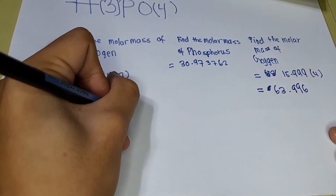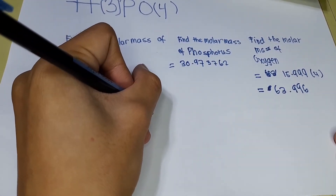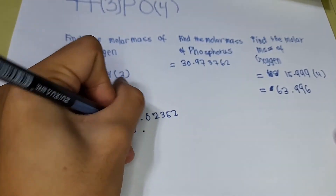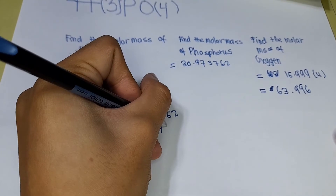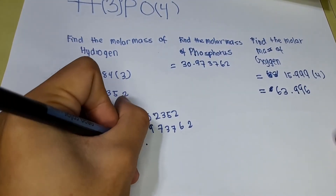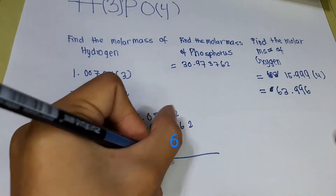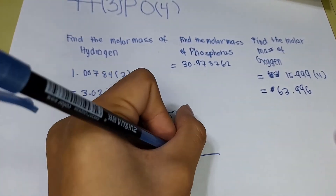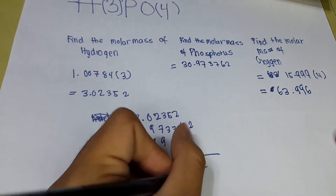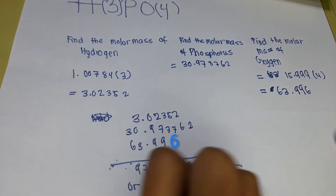Now we will add the three molar masses: 3.02352 of hydrogen, 30.973762 of phosphorus, and 63.996 of oxygen, which equals 97.993282, or simply 98 grams per mole.